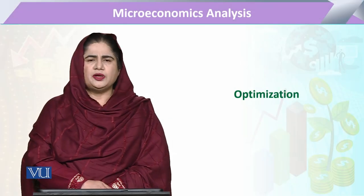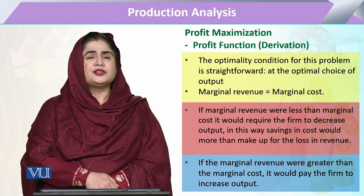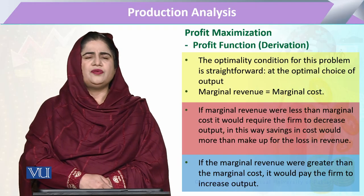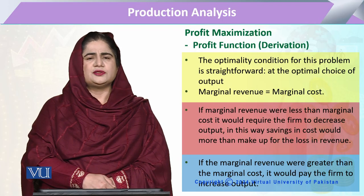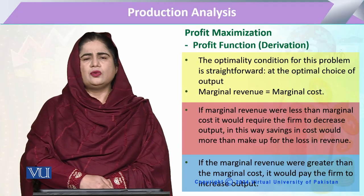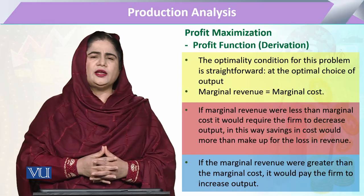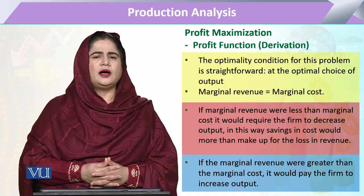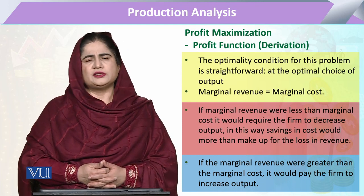In the chapter of optimization, today's topic is profit function derivation. As we have studied previously, the profit function of any firm is always the difference of revenue with the cost. When we take the derivative of the revenue and derivative of the cost, we find that there is always a point where marginal revenue will be equal to the marginal cost.